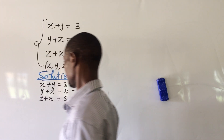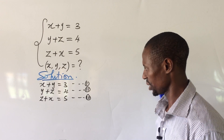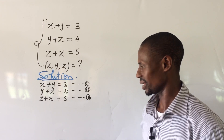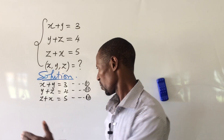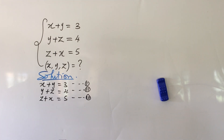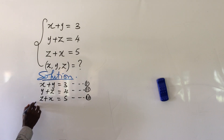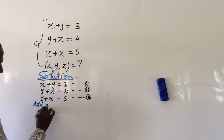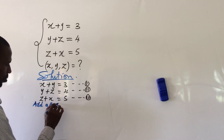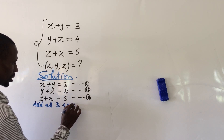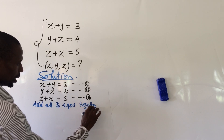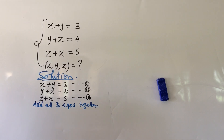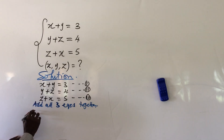Now from these three equations, the number one thing we do is to get the solver equation. How do we get the solver equation? We add all three equations together. So if we add all three equations together, we're going to have x plus y, from the first one, plus y plus z, plus z plus x.